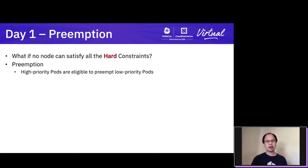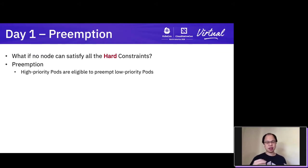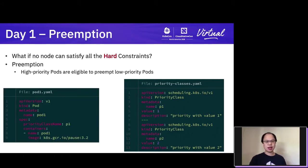You may think: what if no node can satisfy all the hard constraints in the filtering phase? We have a special phase called preemption. Preemption is only triggered when there's no node that can satisfy the hard constraint. It will check whether there are low-priority pods which can be sacrificed — preempted — to make room for the high-priority pod. If this is possible, the scheduler will preempt the low-priority pod so the high-priority pod becomes schedulable. In terms of API, you define the PriorityClass and specify its value — the higher the value, the more important the priority. In the pod spec, you define spec.priorityClassName corresponding to that priority class.